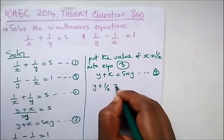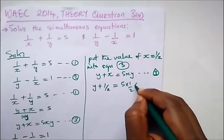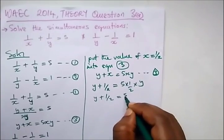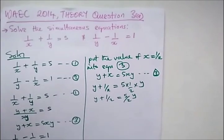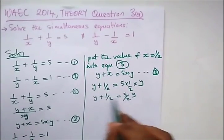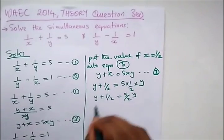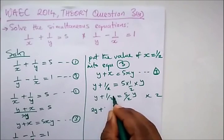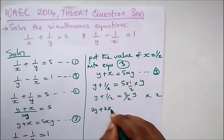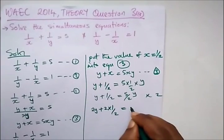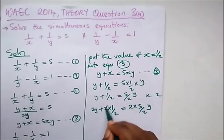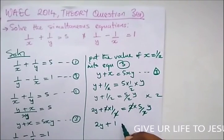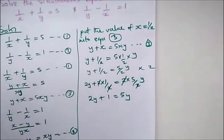Substituting x = 1/2, we have y plus 1/2 equal to 5 times 1/2 times y. Multiplying every term by 2 to cancel the denominators: 2y plus 1 equal to 2 times 5 over 2 times y. This simplifies to 2y plus 1 equal to 5y.